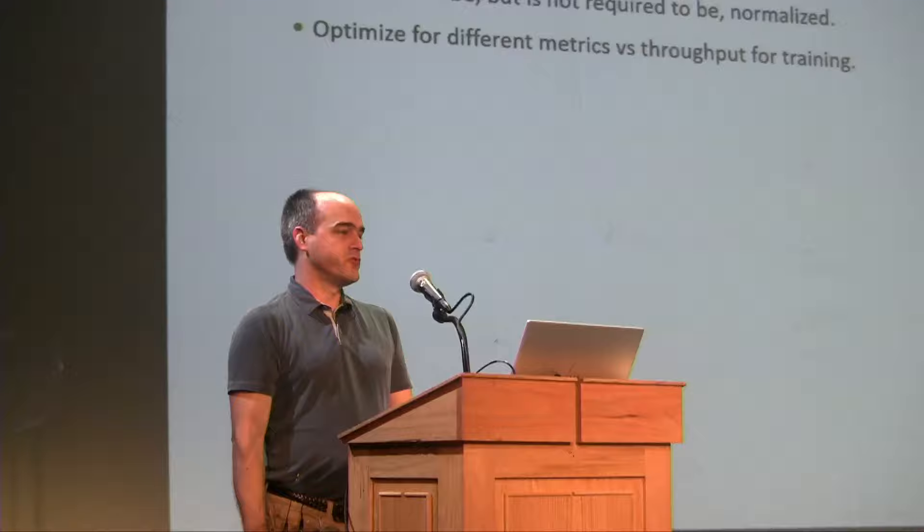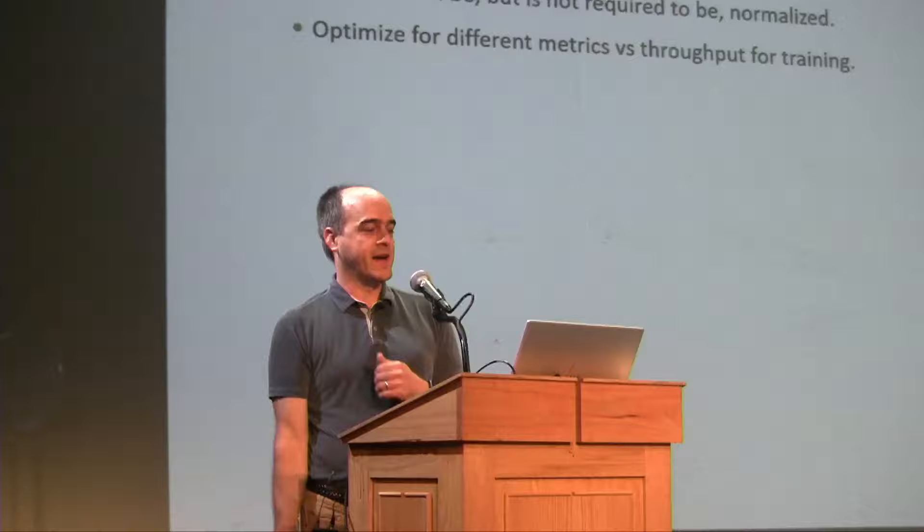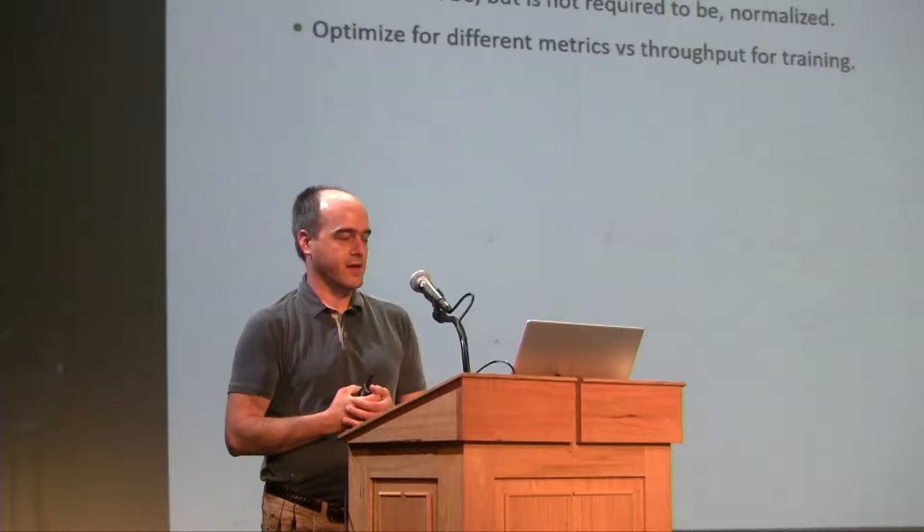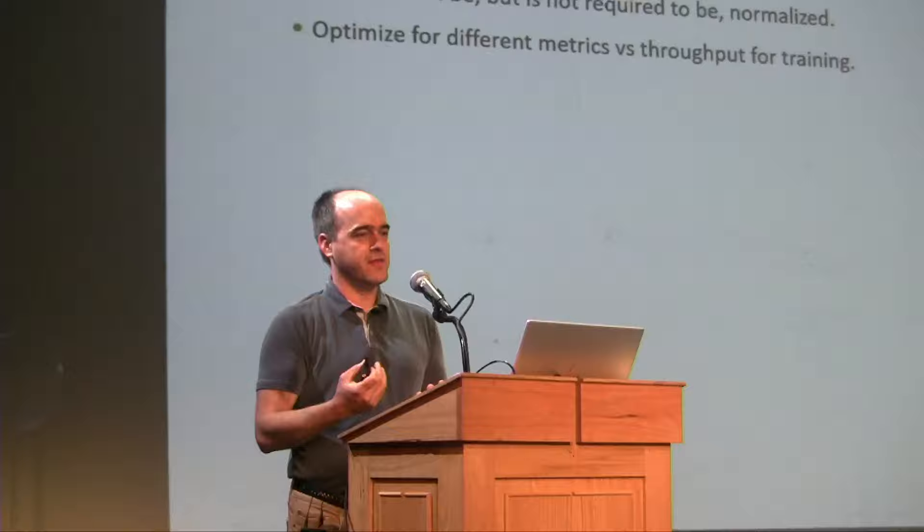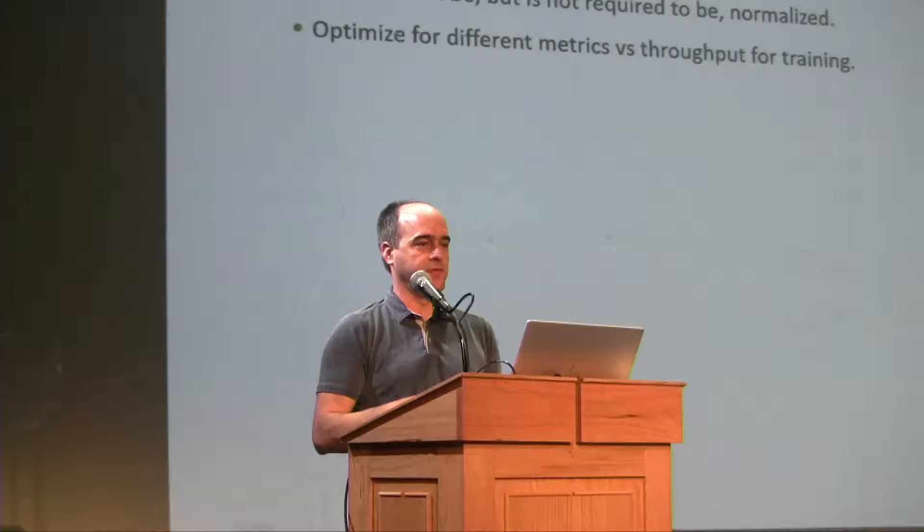How is neural network inference different from training? Mostly, neural network inference is forward pass only — no backward pass. So you're allowed to do optimizations that you cannot do in training. The weights are normally read-only, and you don't need to store the activations since there are no backward passes.